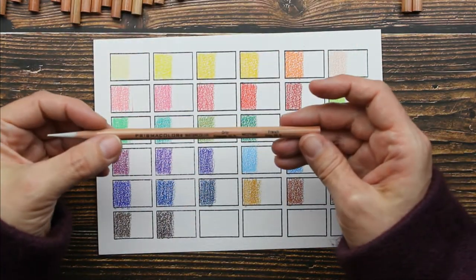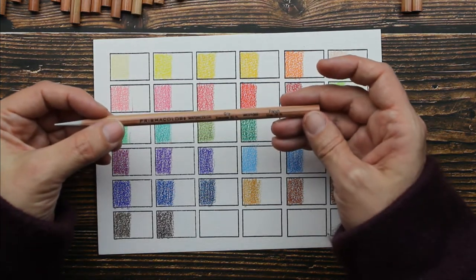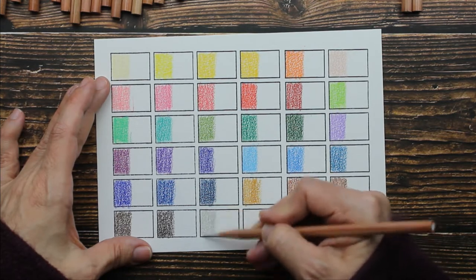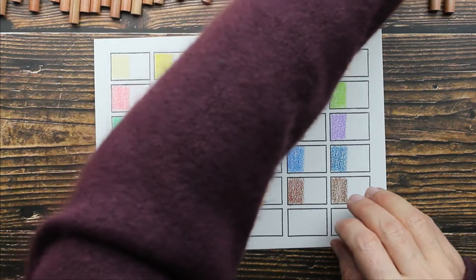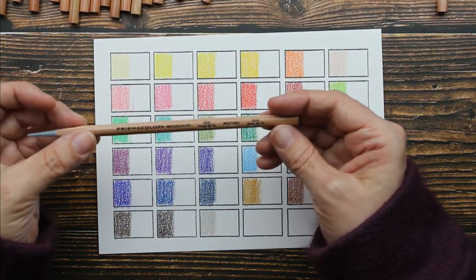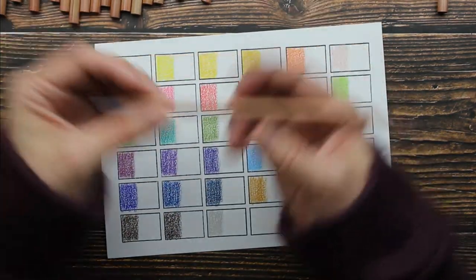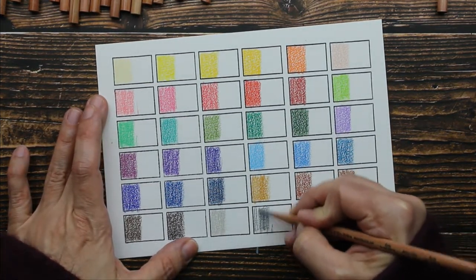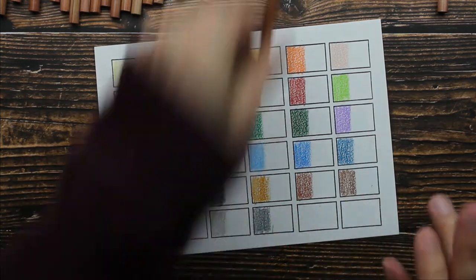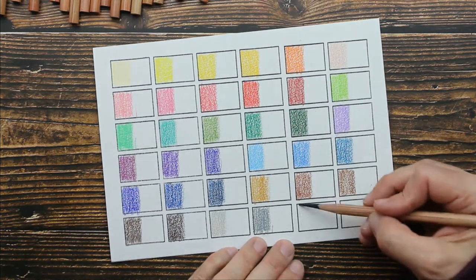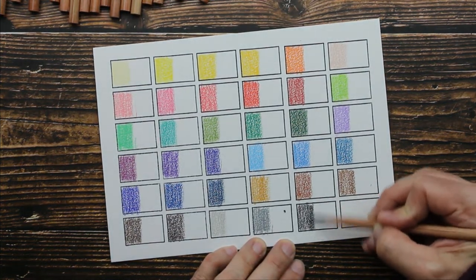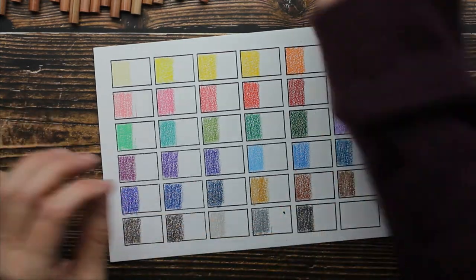And then we move into our grays. This is called French Gray 20%. Very light gray. It's a beautiful gray. Very taupey. And then we have cool gray 50%. And then we have a black. And then we have a white, which I'm not going to swatch.